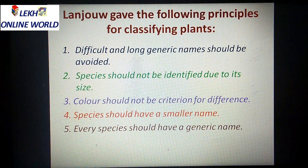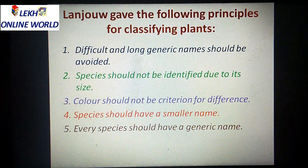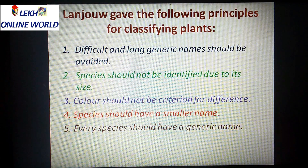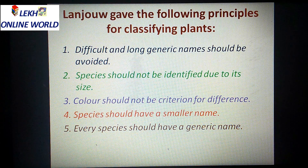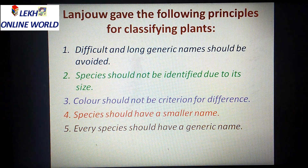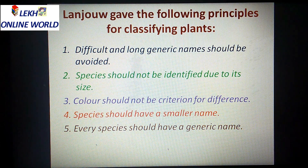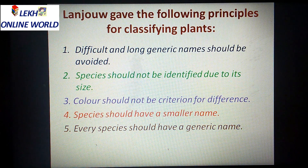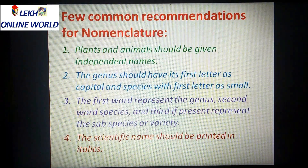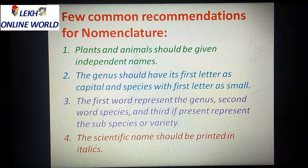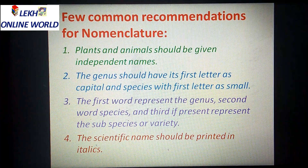Second, species should not be identified based on its size — size cannot be the basis for identification. Third, color should not be a criterion for difference. Fourth, species should have a smaller name. Fifth, every species should have a generic name.